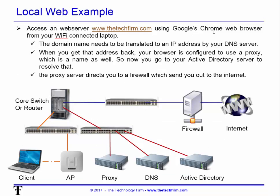We're going to access a web server, techfirm.com, using Google Chrome on a Wi-Fi connected laptop. The domain name needs to be translated by the DNS server. The browser is configured to use a proxy, which has a name, so we have to resolve that — in this case via Active Directory. So we have DNS and Active Directory. Then the proxy server directs you to the firewall, which sends you out to the internet. I'm the client — I go through a wireless access point, which itself has a dependency: how do you authenticate? That connects to a switch, then to a core router or another switch, then our proxy, DNS, and Active Directory. All of these things have to be in place to make things work.